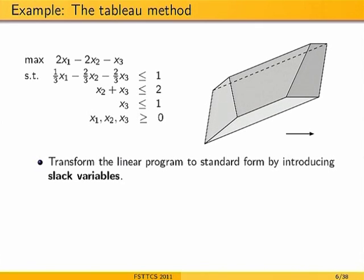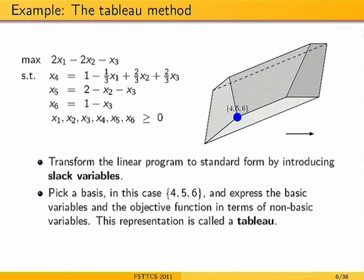Here is a quick example. Given an LP, we put it in standard form by introducing slack variables X4, X5, X6. We start with a basic solution: basis {4,5,6}, setting X1, X2, X3 to 0. Reading off the equality constraints gives X4=1, X5=2, X6=1. This is the current vertex, and now we look at the objective function to see how we can improve.